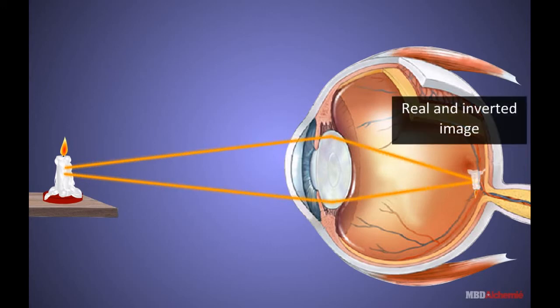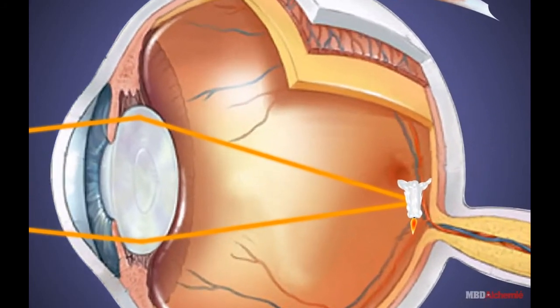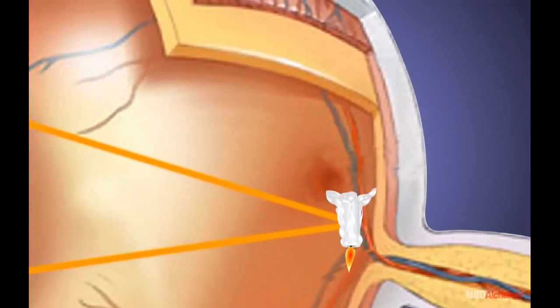A real and inverted image of the object is formed on the retina. The retina consists of light-sensitive receptors known as rods and cones.